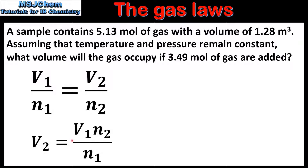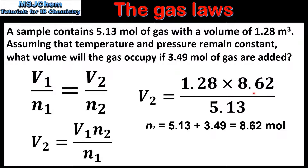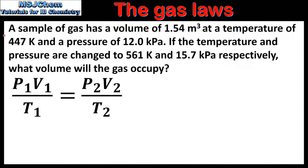To find V2 we rearrange the equation: V2 equals V1 times N2 divided by N1. V1 is 1.28 cubic metres, N2 is 8.62 moles, and N1 is 5.13 moles. This gives us a value for V2 of 2.15 cubic metres.